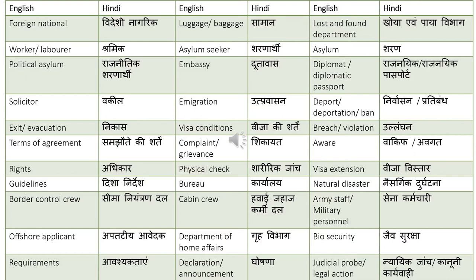Declaration or announcement — ghoshna. Lost and Found Department — khoya evam paya vibhaag. Asylum — sharan. Diplomat or a diplomatic passport — rajanik or rajanik passport. Deportation or a ban: deportation is translated as nirvasan — that is how you translate nirvasan. Ban is translated as pratiband.